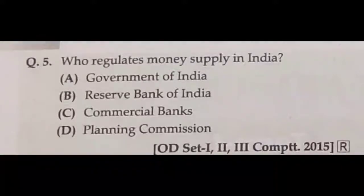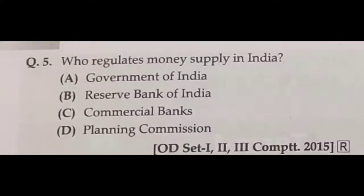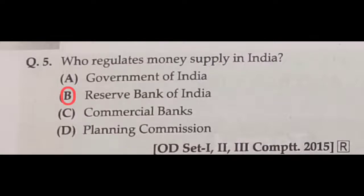Question number five: who regulates money supply in India? The options are A — Government of India, B — Reserve Bank of India, C — Commercial Banks, D — Planning Commission. Reserve Bank of India is the correct answer. Option B is correct.